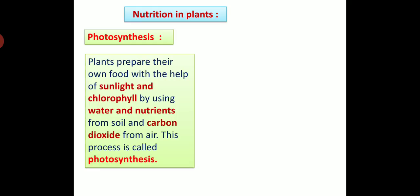Now we are going to see about the process of photosynthesis. The process of photosynthesis takes place in green plants in which plants can prepare their own food. Plants prepare their own food with the help of sunlight and chlorophyll, by using water and nutrients from soil and carbon dioxide from air. This process is called photosynthesis.